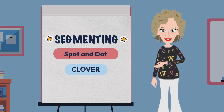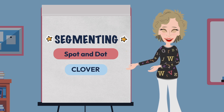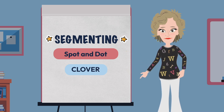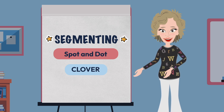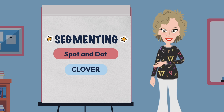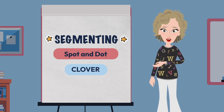C equals closed. L equals C-plus-LE. O equals open. V equals vowel teams — the talkers and the whiners. E equals final E. And R equals R-controlled.